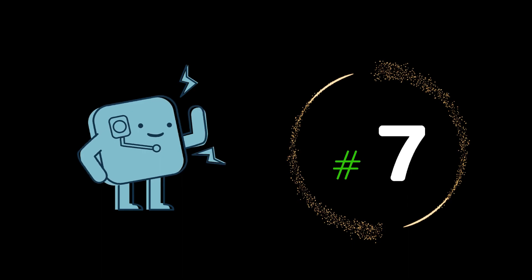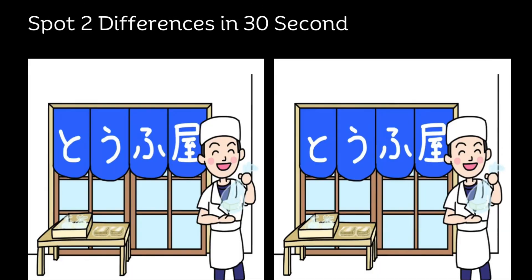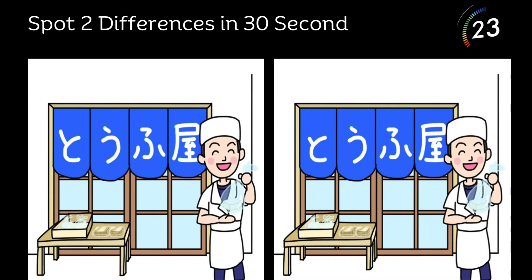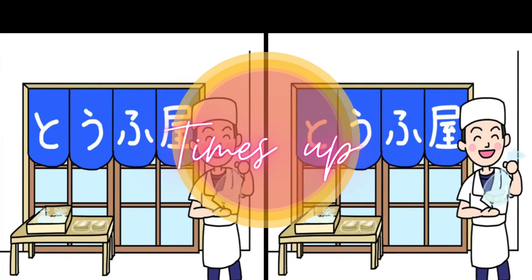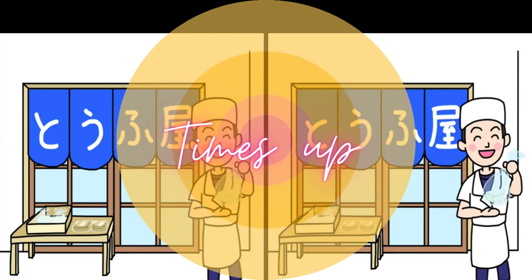Puzzle No. 6. Spot two differences in 30 seconds. Your time starts now. Time's up. Let's see the spot.